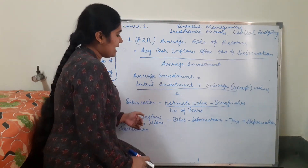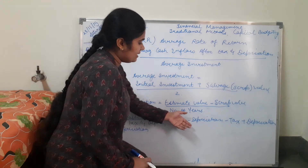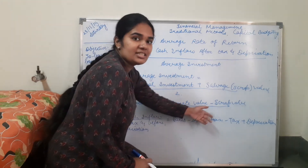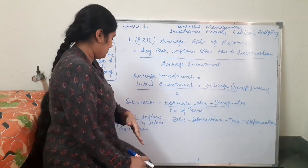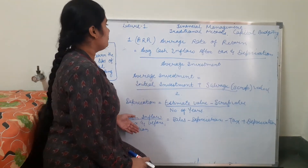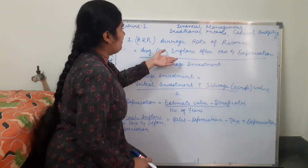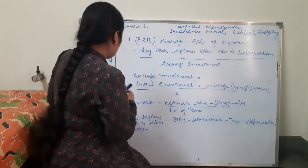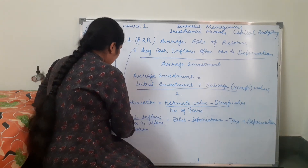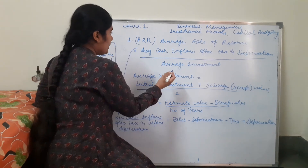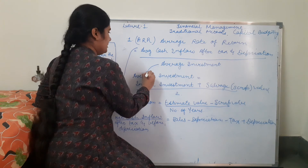Net cash inflow is total sales minus depreciation minus tax, and then we add depreciation back. So we get net cash inflow. We are getting net cash inflow from this and average investment from this.